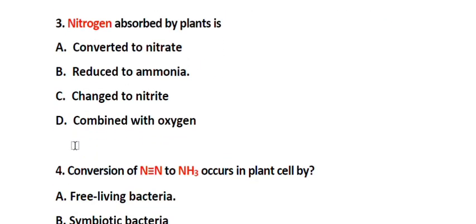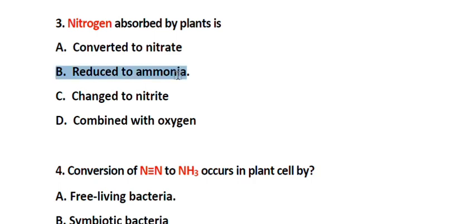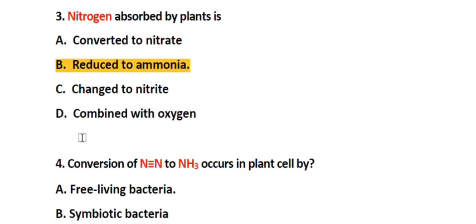Question number 3. Nitrogen absorbed by plants is: Option A. Converted to nitrate, Option B. Reduced to ammonia, Option C. Changed to nitrite, Option D. Combined with oxygen. The correct answer is Option B. Reduced to ammonia.